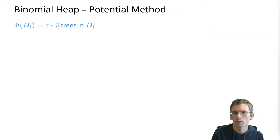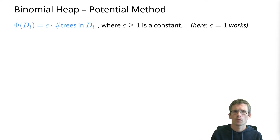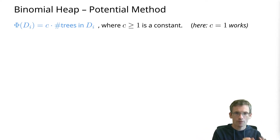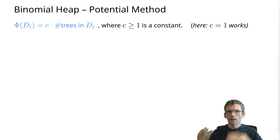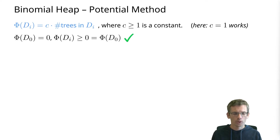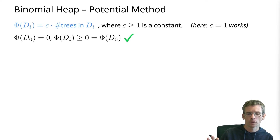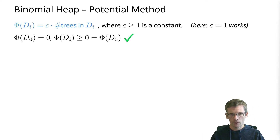Now let's do the same with the potential method. We first need to define a potential. The potential we use is c times the number of trees in the data structure, where c is a constant that is at least one. We could have set c to one, but keeping c explicit is useful for similar analyses in other contexts. We check: the initial potential is zero, and the number of trees is always non-negative, so the potential always stays above the initial potential. Therefore we can apply the potential method.